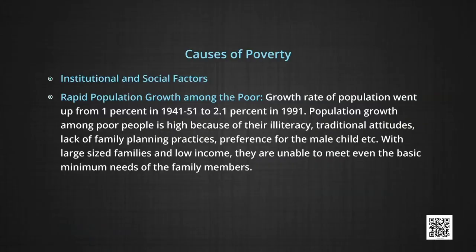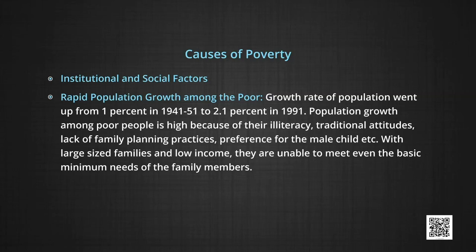Several causes are listed below. First, institutional and social factors: the causes of poverty lie in institutional and social factors that mark the life of the poor. The poor are deprived of quality education and are unable to acquire skills which fetch better incomes. Good health care facilities are also not available to the poor. Second, rapid population growth among the poor: the growth rate of population rose phenomenally. Population growth among poor people is high because of their illiteracy, traditional attitudes, lack of family planning practices, and preference for the male child. With large-sized families and low income, they are unable to meet even the basic minimum needs of family members.